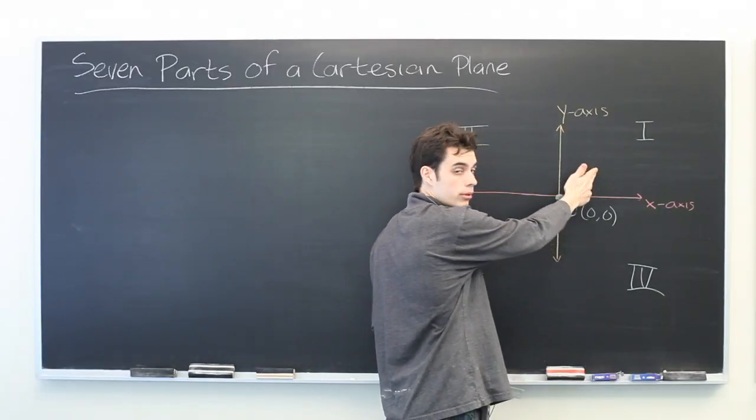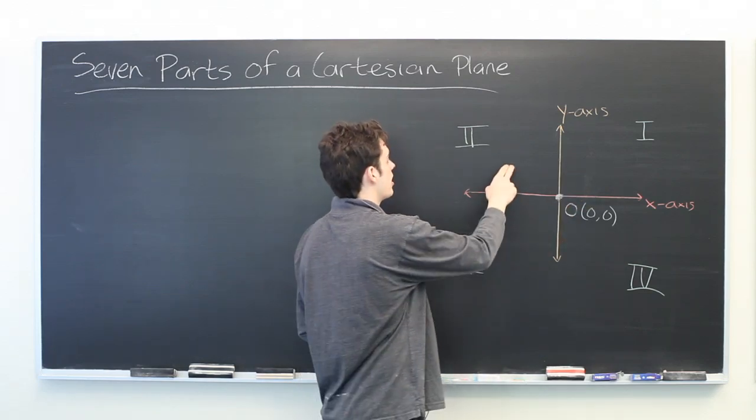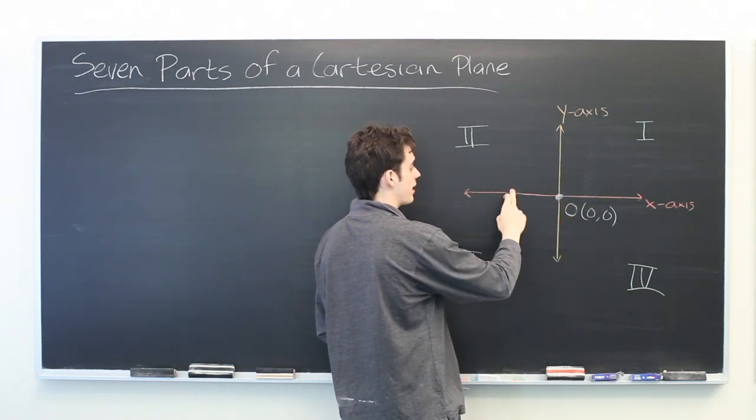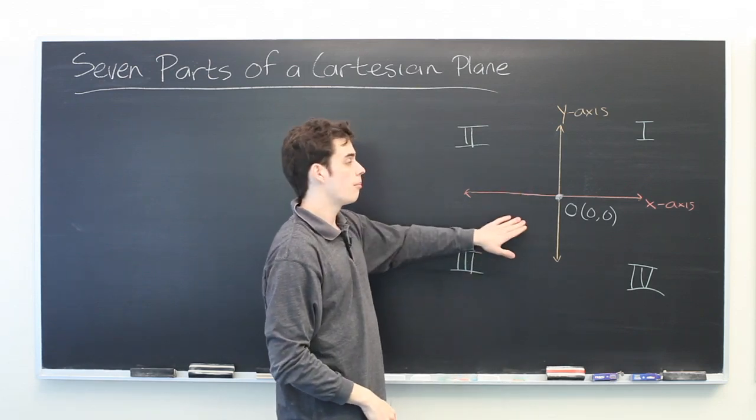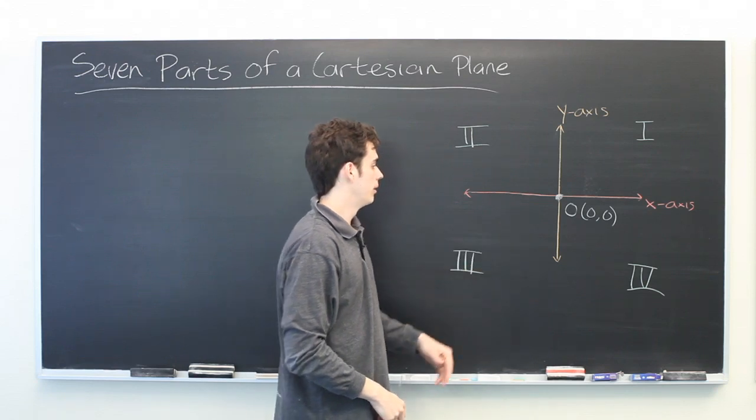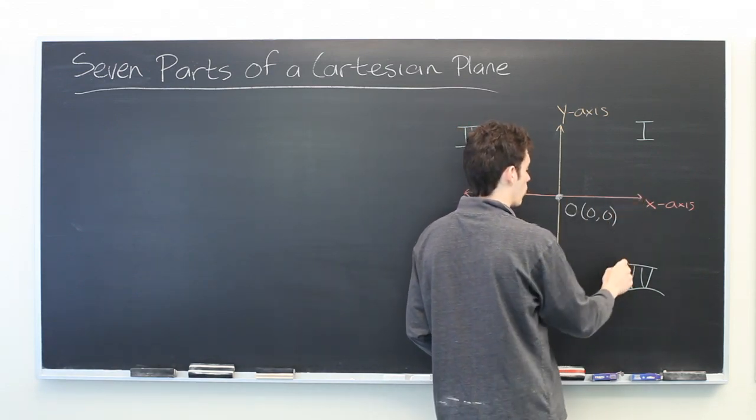In the first quadrant, both the x and y values are positive. In the second, x is negative, y is positive. In the third, both x and y are negative. And in the fourth, x is positive and y is negative.